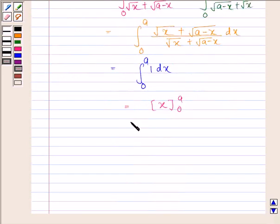This is equal to a minus 0 and this is equal to a. So 2I is equal to a and this implies I is equal to a by 2.